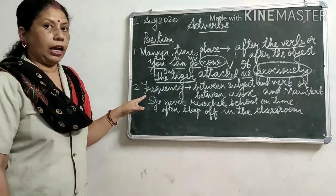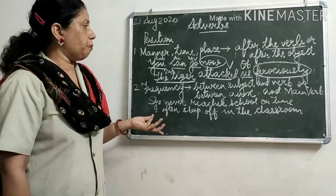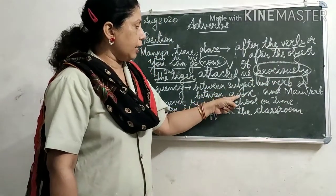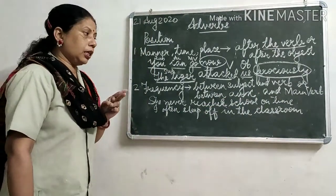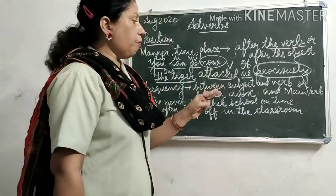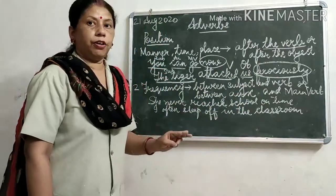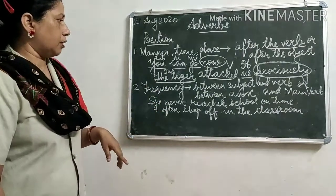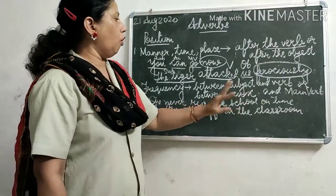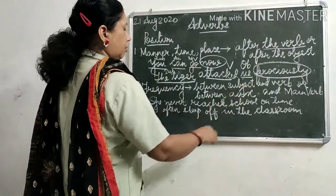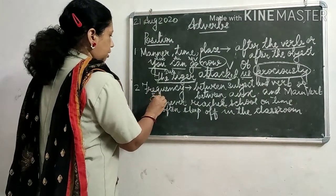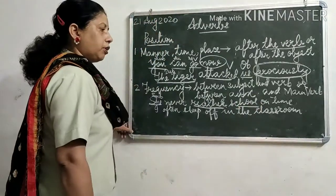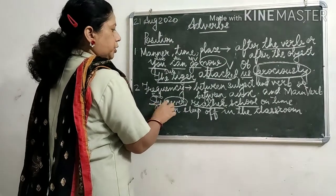Now, when we have an adverb of frequency, we place it between the subject and the verb, or between the auxiliary verb and the main verb. In the example 'She never reaches school on time,' 'she' is the subject, 'reaches' is the main verb, and 'never' is placed between the subject and the verb.